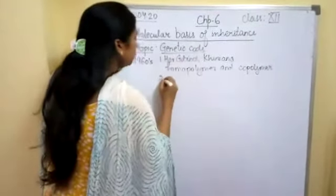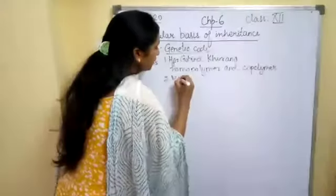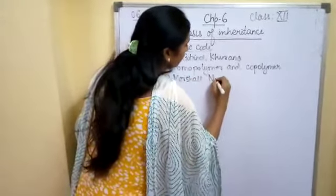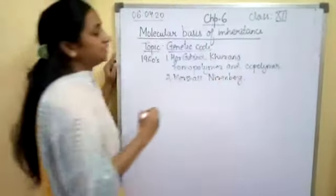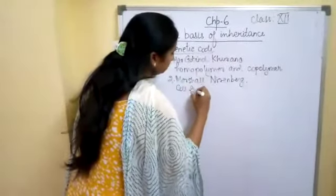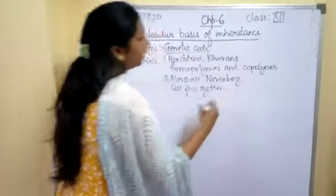Next scientist was Marshall Nirenberg. What the scientist has done? He has discovered or deciphered the genetic code system in a cell-free system which helped in deciphering the genetic code.